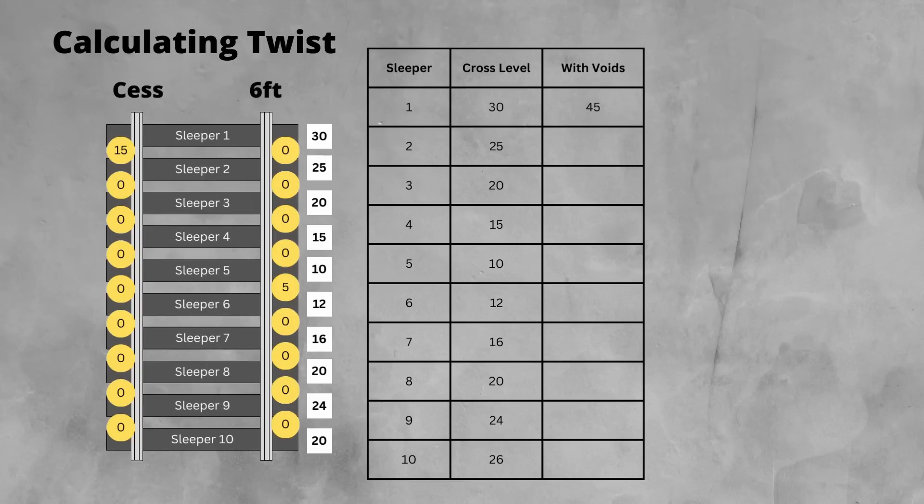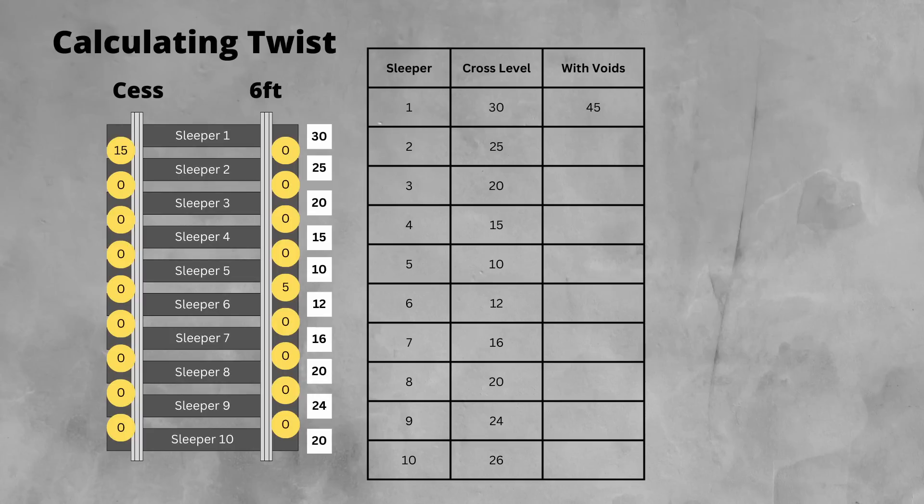On sleeper 5, we take the 5mm away from the 10mm, because when the train goes over, the voiding decreases the difference in height by 5mm.